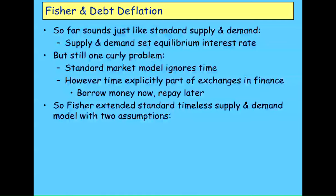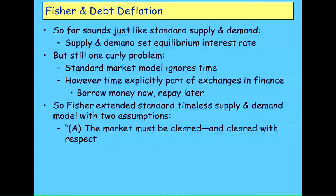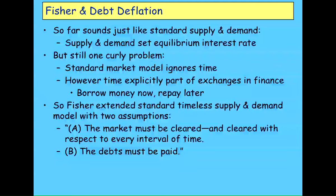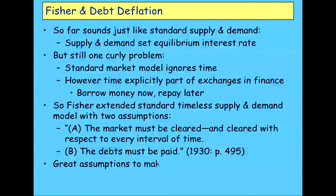How did Fisher handle something he couldn't avoid? Well, he's a neoclassical economist — he made assumptions. Two of them, actually: the market must be cleared with respect to every interval of time, so it's always in equilibrium; and secondly, debts are always repaid. That was a fabulous couple of assumptions to make in 1930. He'd actually first written this as his PhD thesis, published around 1907, and he believed it didn't get a wide enough audience, so he rewrote it and republished it — it came out in 1930. Fisher was blessed with disastrous timing.